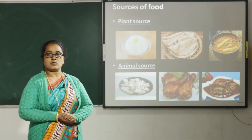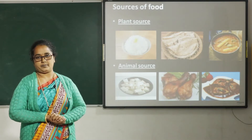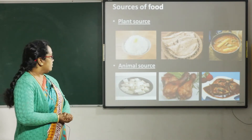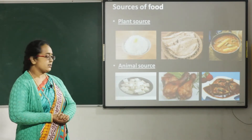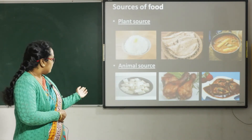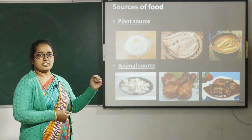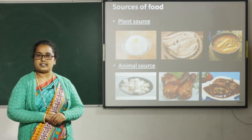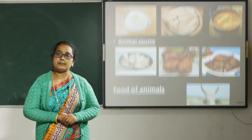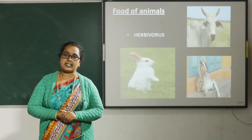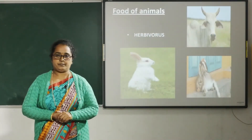Next we have animal source of food items. Animal source food items are paneer, chicken, fish curry, etc., which are prepared from animal source.